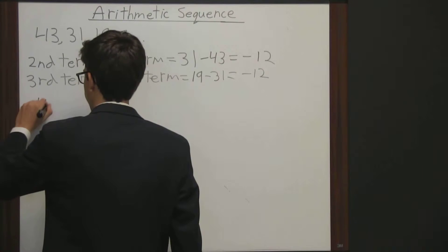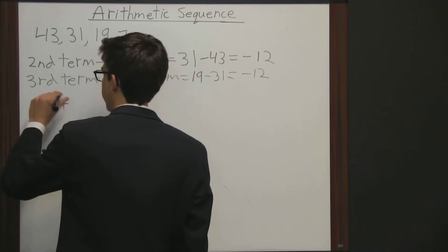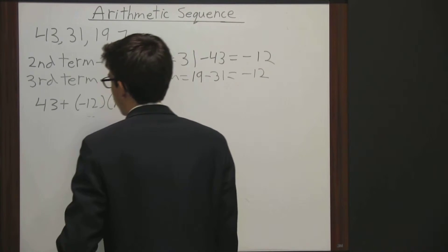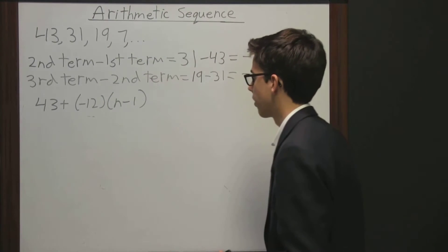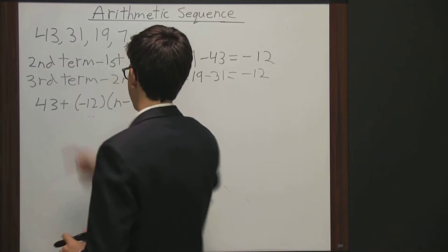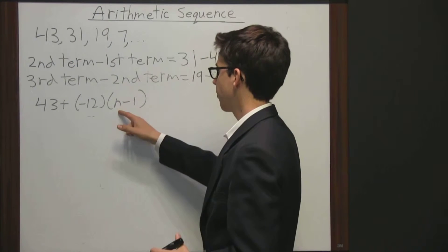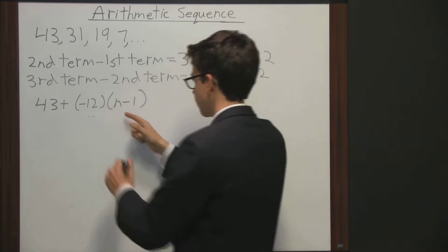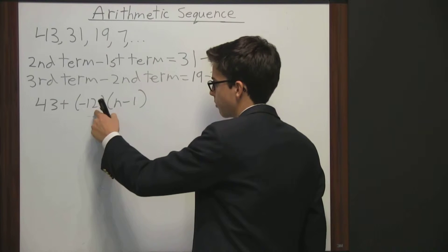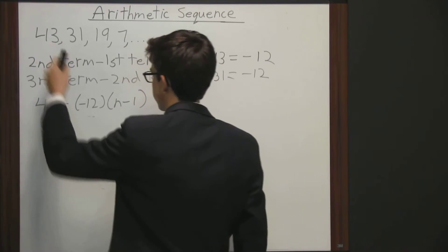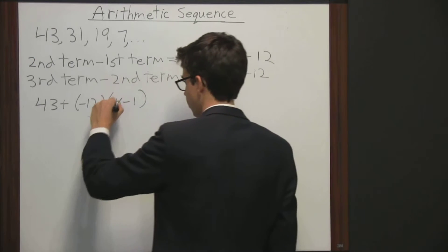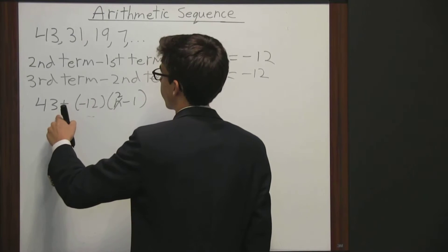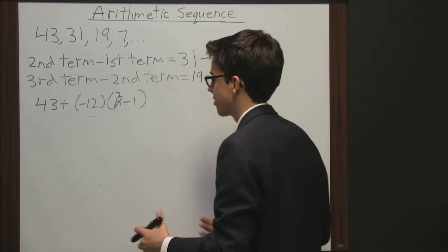So by looking at this we can come up with an equation to represent this. We start with 43, which is the first term we have. So we have n right here, which represents how many numbers you are into the sequence. Say we're the first number into the sequence: it would be 1 minus 1 equals 0, times negative 12 is 0, so we get 43. If this was the second term, we'd have a 2, so 2 minus 1 is 1, times negative 12 is negative 12, plus 43 is 31. So you can see how this equation works.